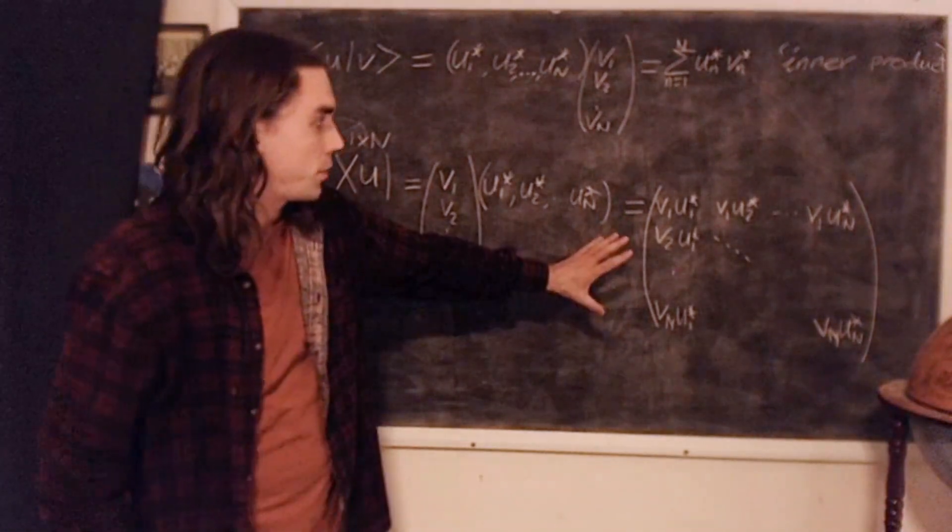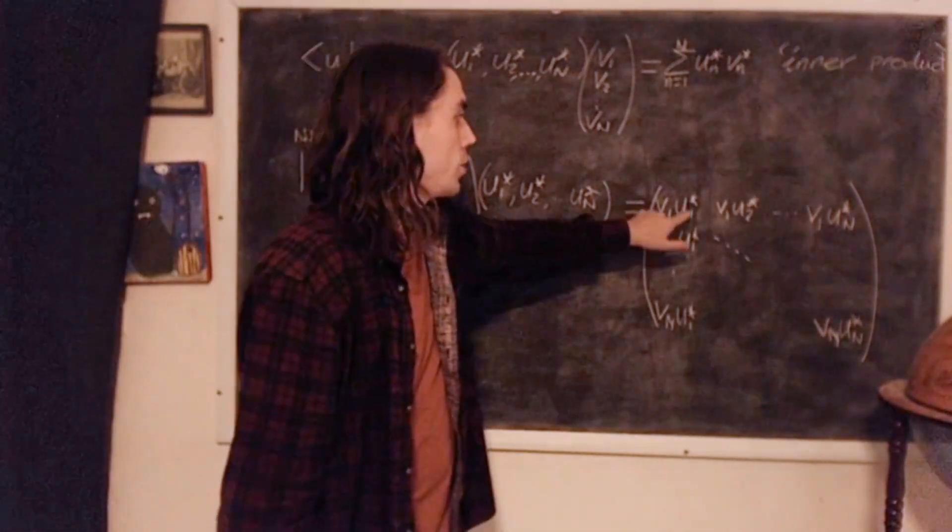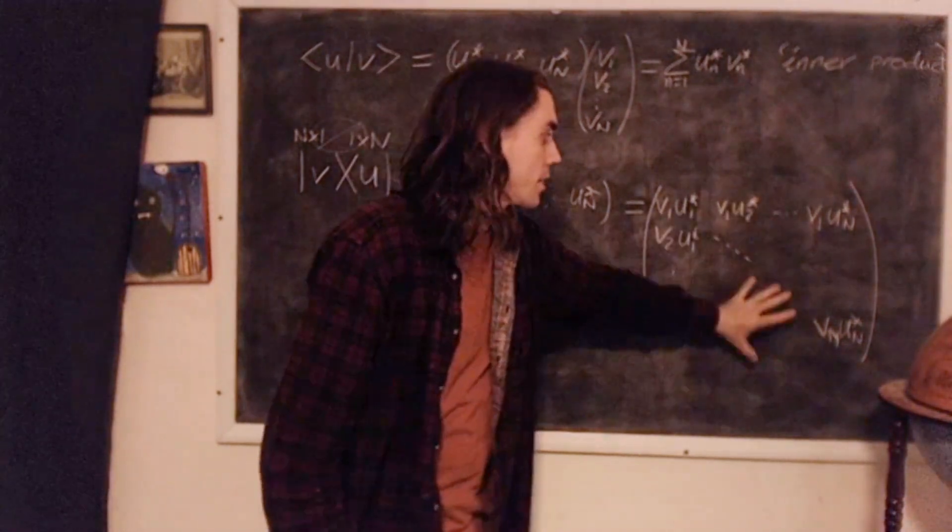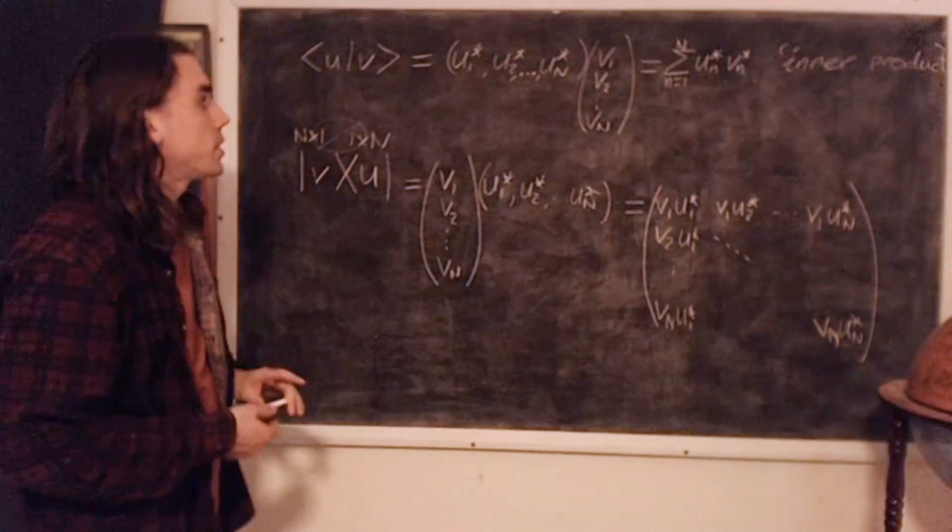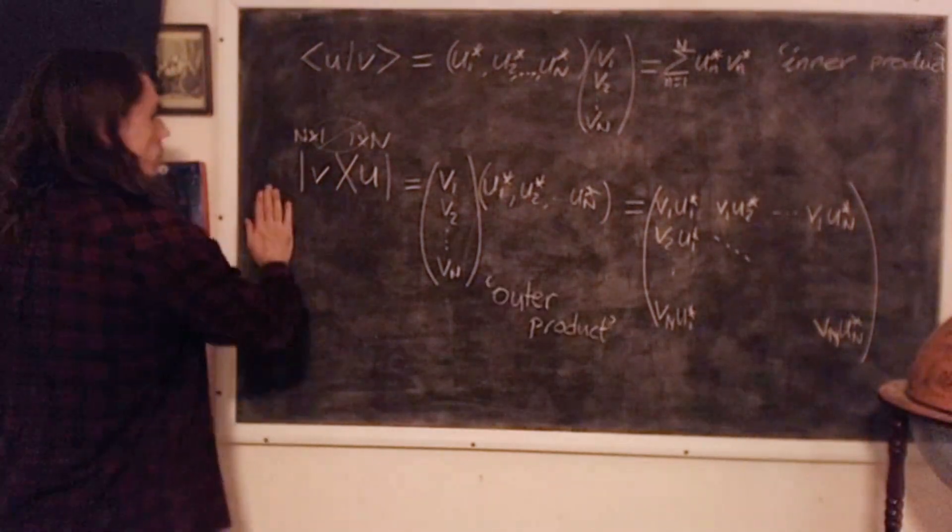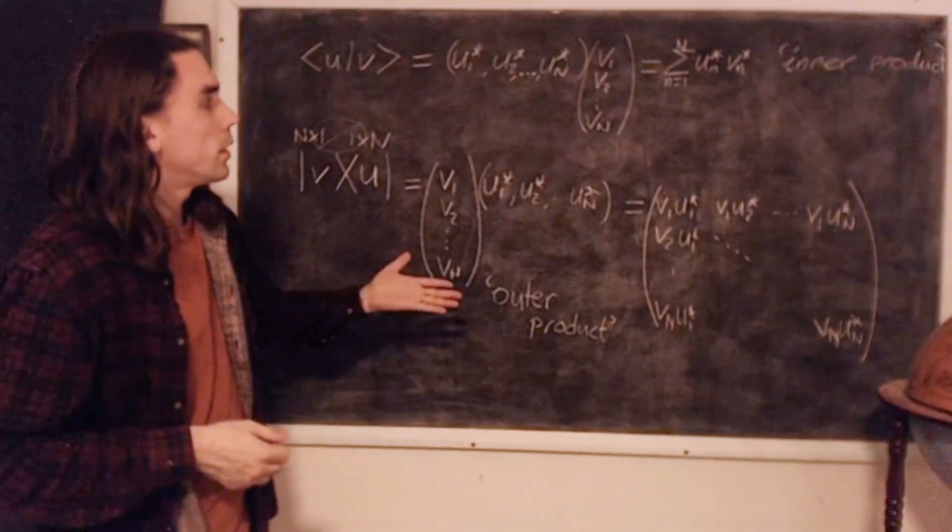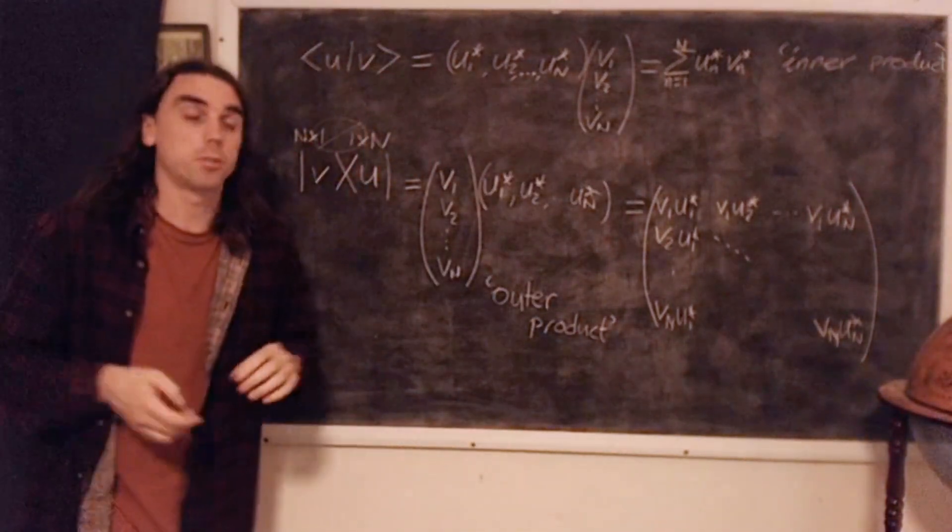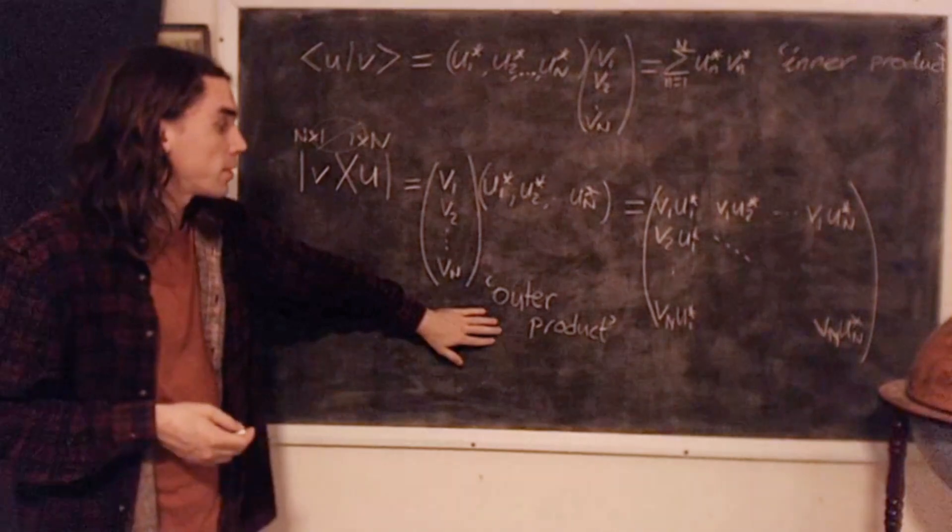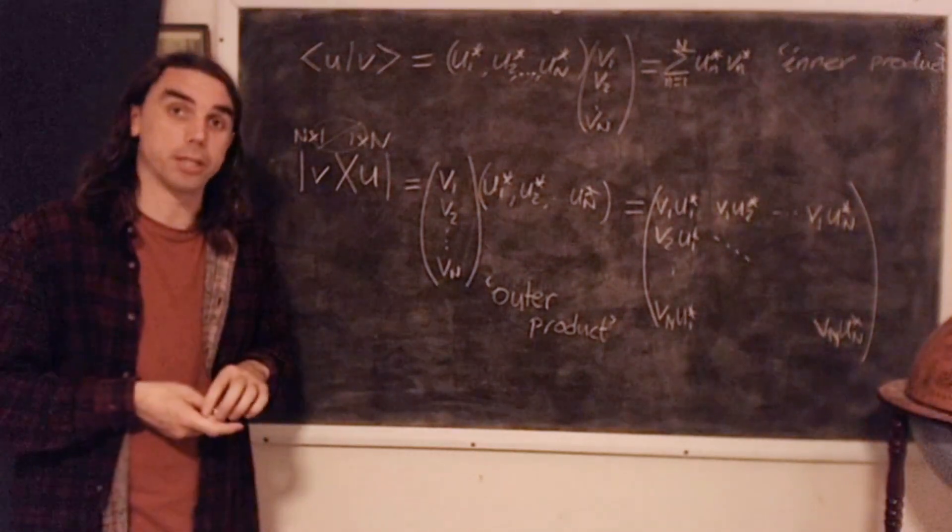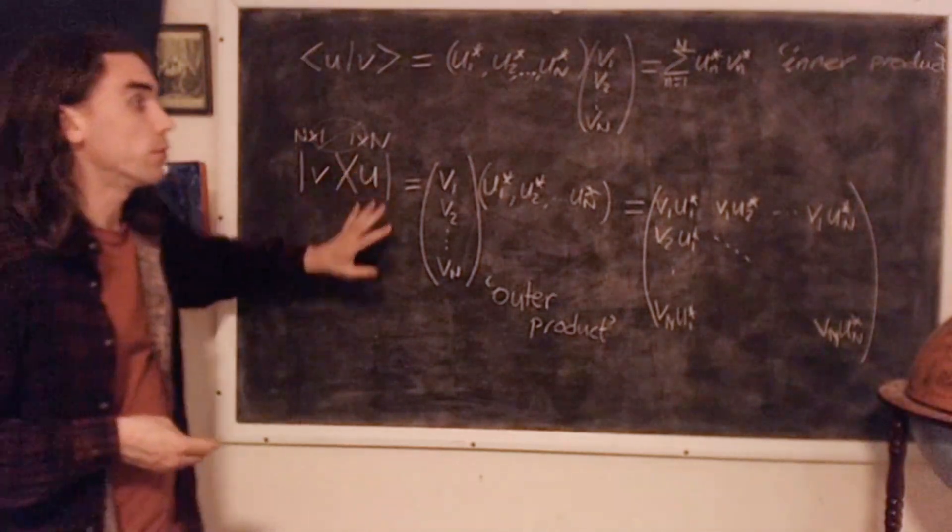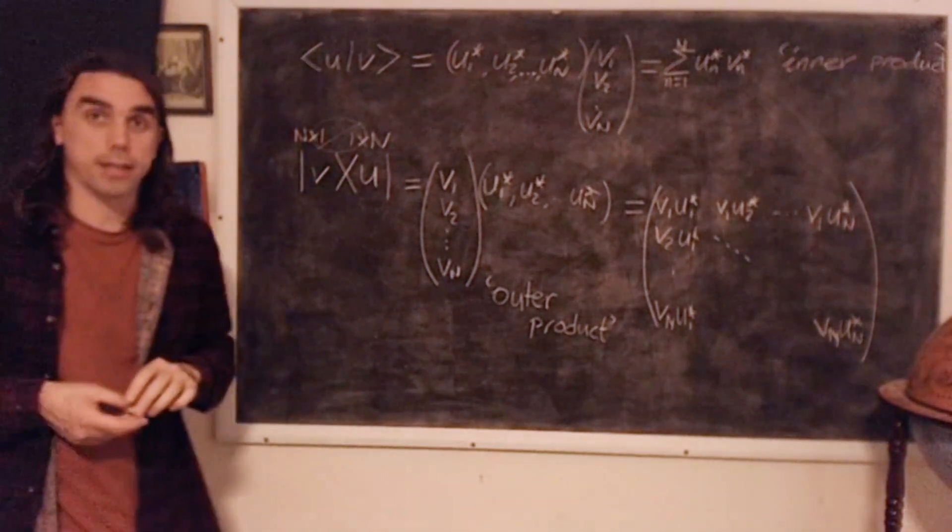So it's an n by n matrix where the first entry is V1 U1 star, second, element 1, 2 is V1 U2 star, and so on. So this is what we call the outer product. Just as the inner product may be familiar as the dot product between two vectors, the outer product may or may not be familiar as what's called the tensor product between two vectors. Okay, so these two objects are extremely useful in dealing with our complex vector spaces.